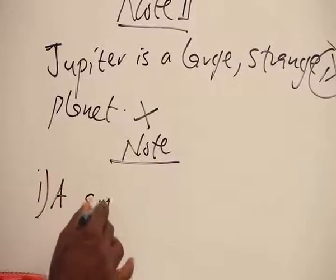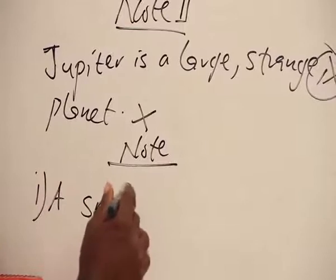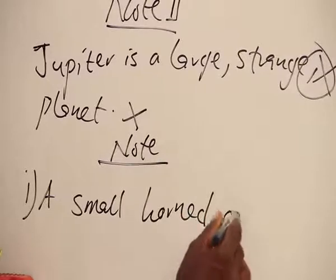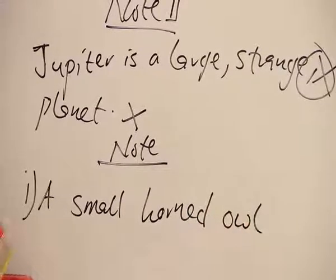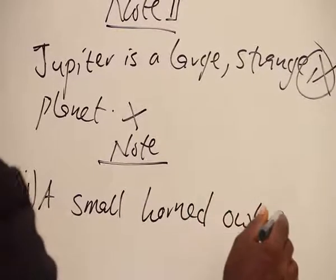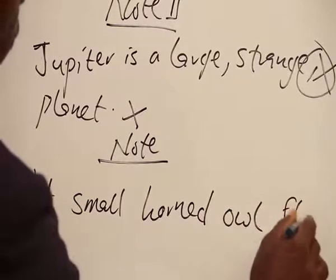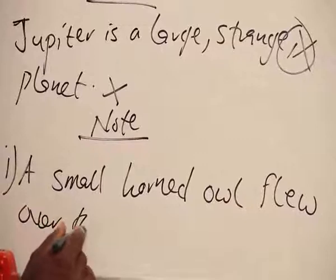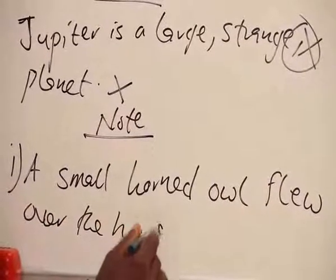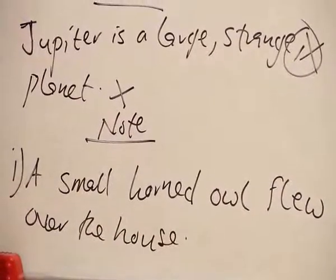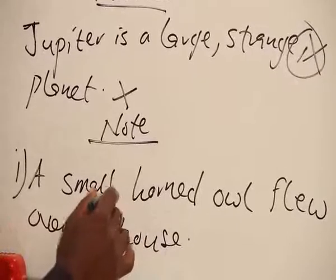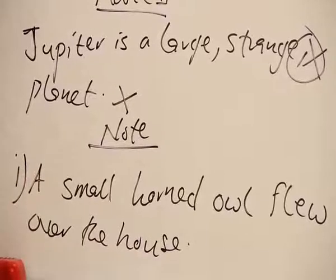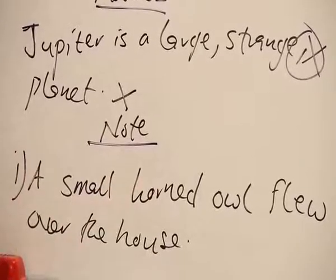A small horned owl flew over the house. Now, you see that there's no comma between small and horned. Small is an adjective. Horned is an adjectival.